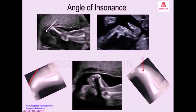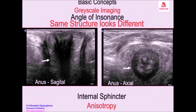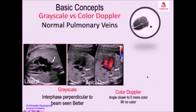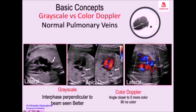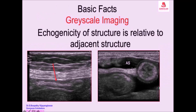I have made this part of the tibia perpendicular to the beam, so it is seen well. When the angle of incidence is 90 degrees, you don't get any Doppler shift, so you will not see any color filling. That is why to see color, you go to the lateral approach.